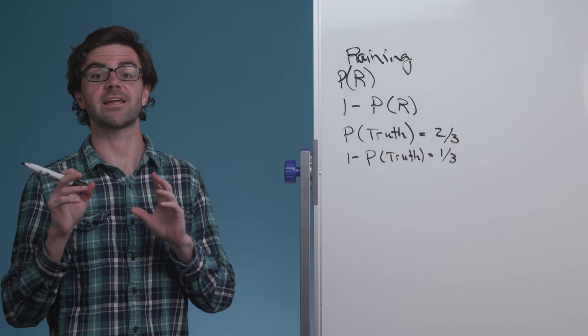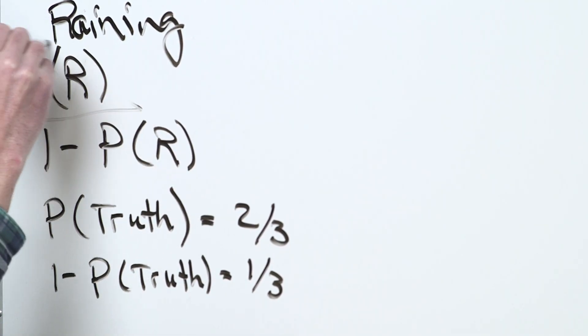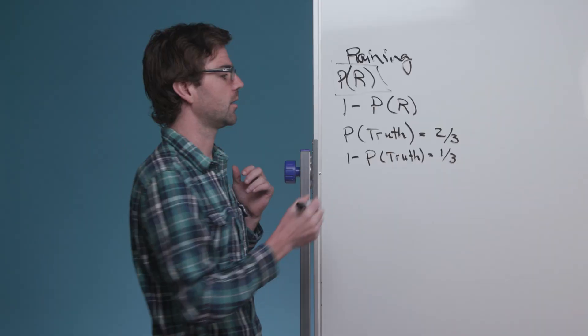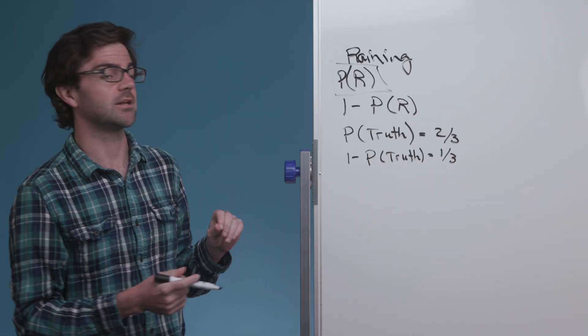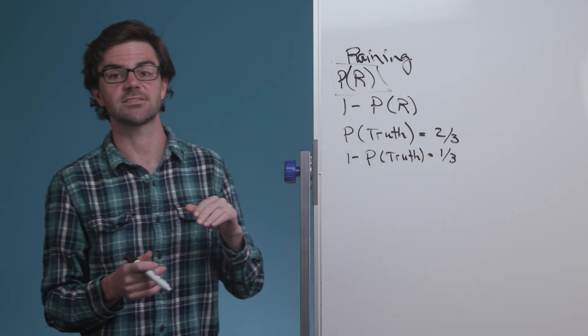There are two ways that all three friends could say yes. They could all tell you the truth — meaning it is actually raining — or they could all be lying — meaning it's not actually raining. So we want to find the probability that it's actually raining in Seattle given that all three said yes.